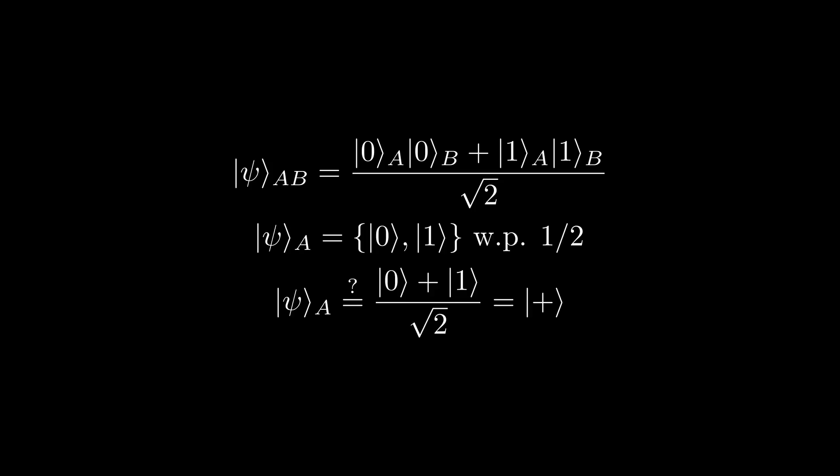For instance, if we apply the Z operator to the plus state, we get the minus state. However, if we apply the Z operator to the probabilistic mixture described before, we still have the exact same state, as the extra global phase on state 1 can be ignored.